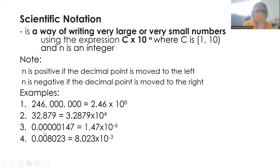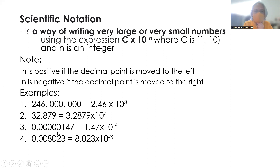In this one, we have 0.0000147. So again, we get to choose our c. Our c is 1.47. Hindi pwedeng 0.147, hindi rin pwedeng 14.7, hindi pwedeng 147 — bakit? Dapat nandito sa range na ito, closed interval 1, open interval 10. So our c is 1.47. And since we move the decimal point to the right 6 times, we have 1.47 times 10 to the negative 6.